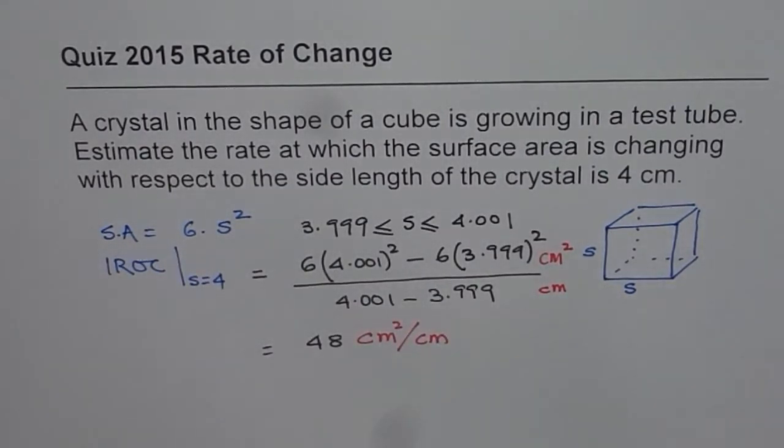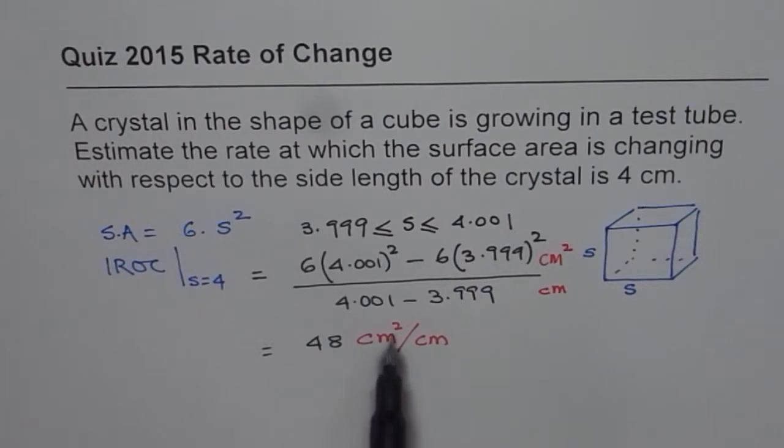Now if you forget the units then you are going to lose a lot of marks. Also I am suggesting not to cancel this, right? Centimeter square per centimeter. So the instantaneous rate of change when the side length is 4 centimeters is 48 centimeter square per centimeter. That is the answer.